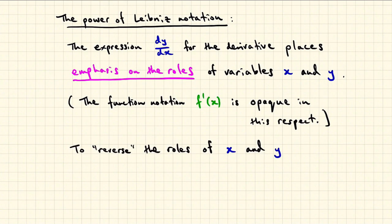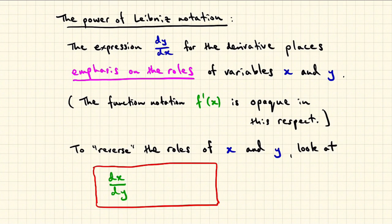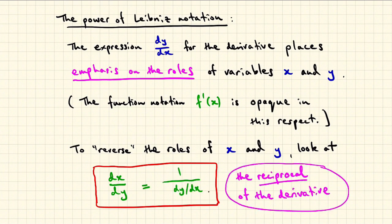If one wants to reverse the roles of the variables x and y, it makes perfectly good sense, using Leibniz notation, to tip dy dx upside down. That is, form dx dy, interchanging the differentials in the numerator and the denominator. And if these were ordinary fractions, the effect would be to form the reciprocal.